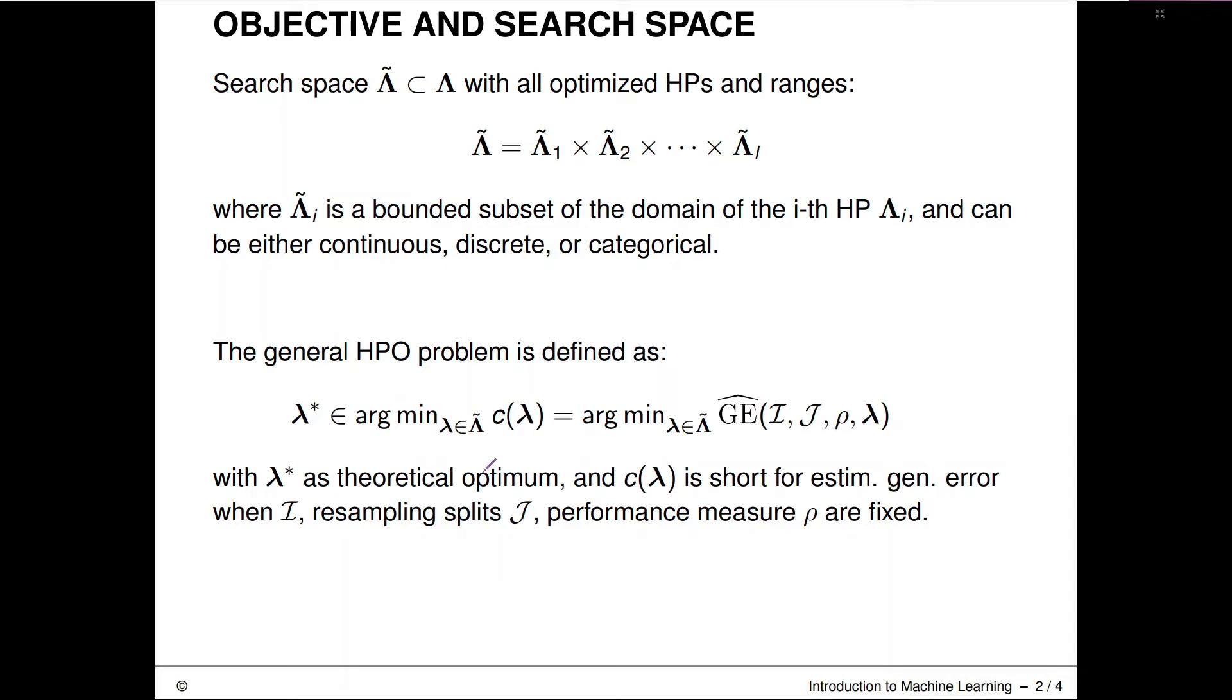Now, let's fix mathematical notation a little bit more. So first of all, in order to define a formal optimization problem, we are now defining the search space. So we're assuming there are L hyperparameters and they all have a certain range of values they can take. And usually we will denote that with a capital Lambda.